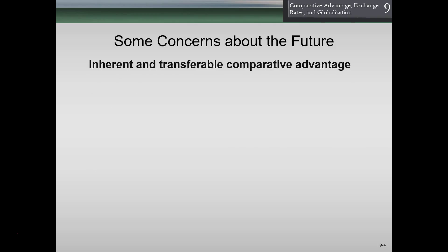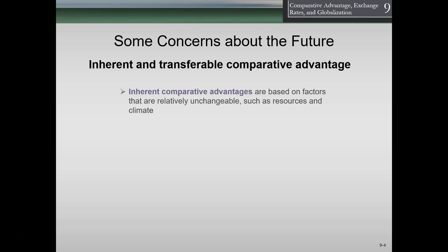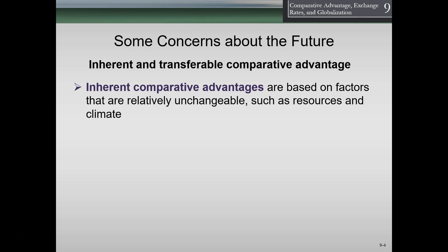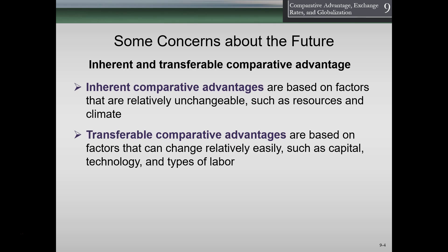Some concerns about the future, however. There is a distinction between inherent and transferable comparative advantage. Inherent comparative advantage is based on factors that are relatively unchangeable, such as natural resources and climate — things we're good at because of the nature around us. If a country has oil or good farming resources, that's an inherent advantage. These things don't change too rapidly and aren't going to go away too easily.